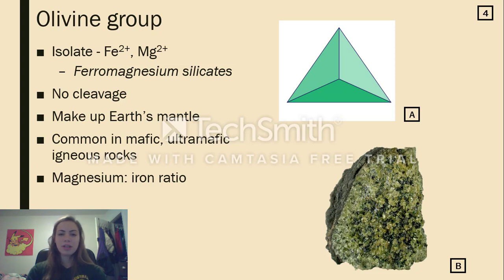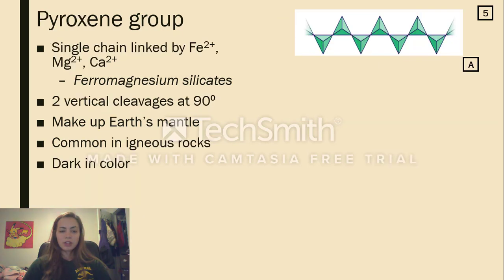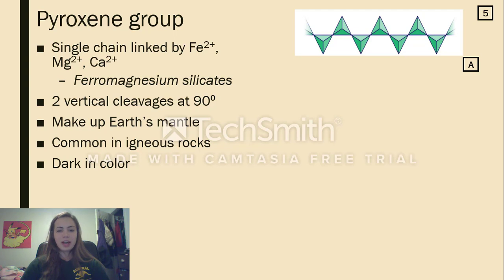The pyroxene group are single chain ferromagnesium silicates, where in addition to the iron and the magnesium cations, calcium cations will commonly bind to each tetrahedron. The bonds in between the tetrahedron are pretty weak compared to those silicon oxygen bonds. This allows cleavage parallel to each sheet.